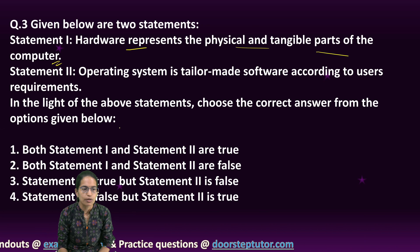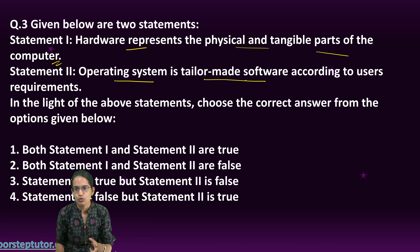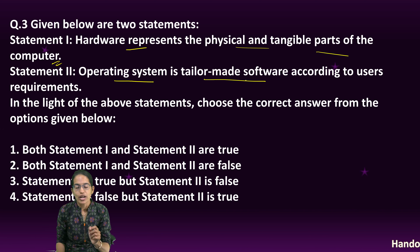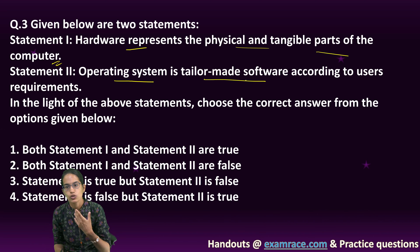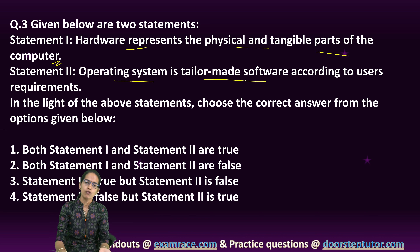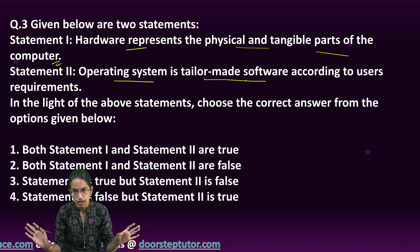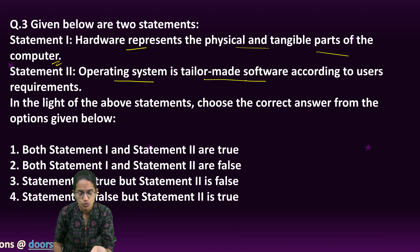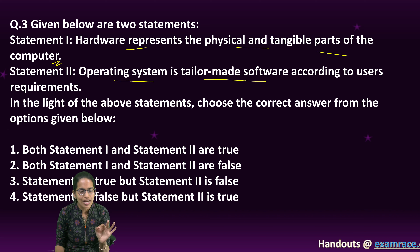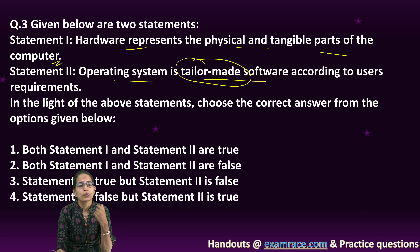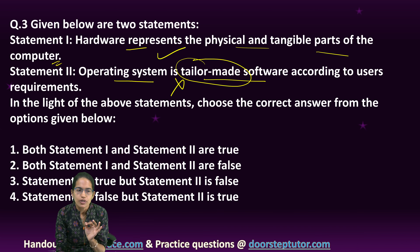The next statement: operating system is tailor-made software — not at all. Tailor-made means custom-made. But operating systems don't work like that. If I have Windows 7 and you have Windows 7, that Windows 7 is the same for both of us — there are no different features for different users. It's not tailor-made. Read the sentences very carefully; most answers you can solve just by reading carefully. So the first statement is correct, the second is incorrect.